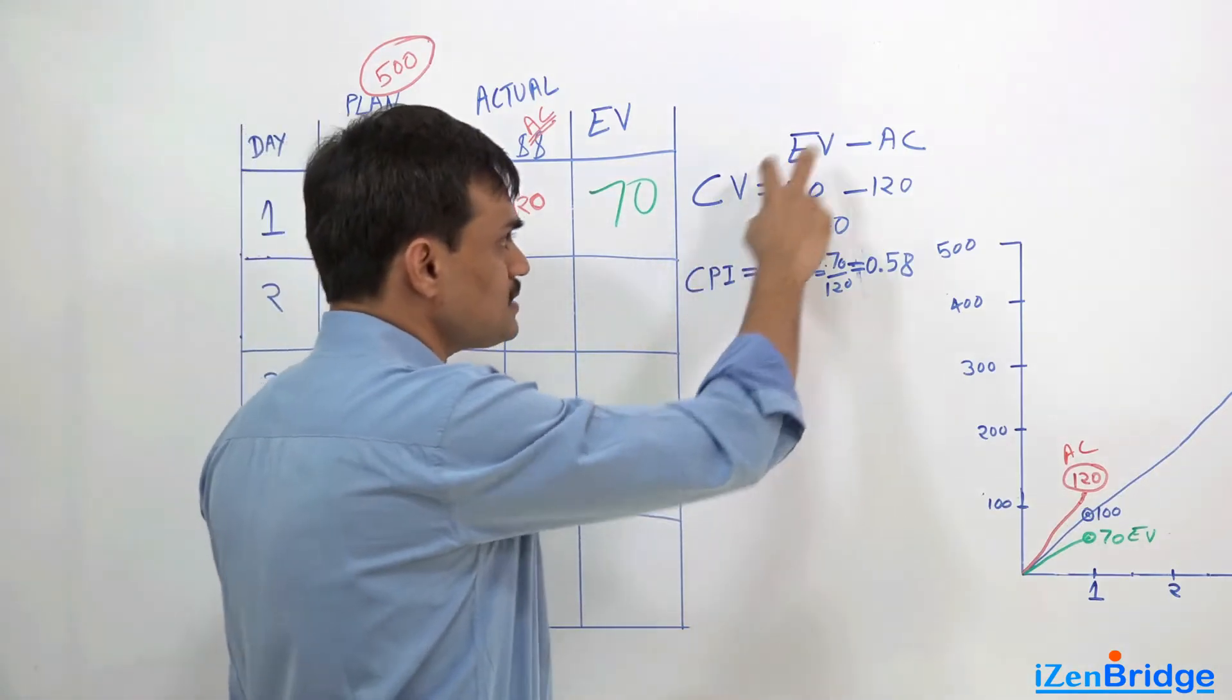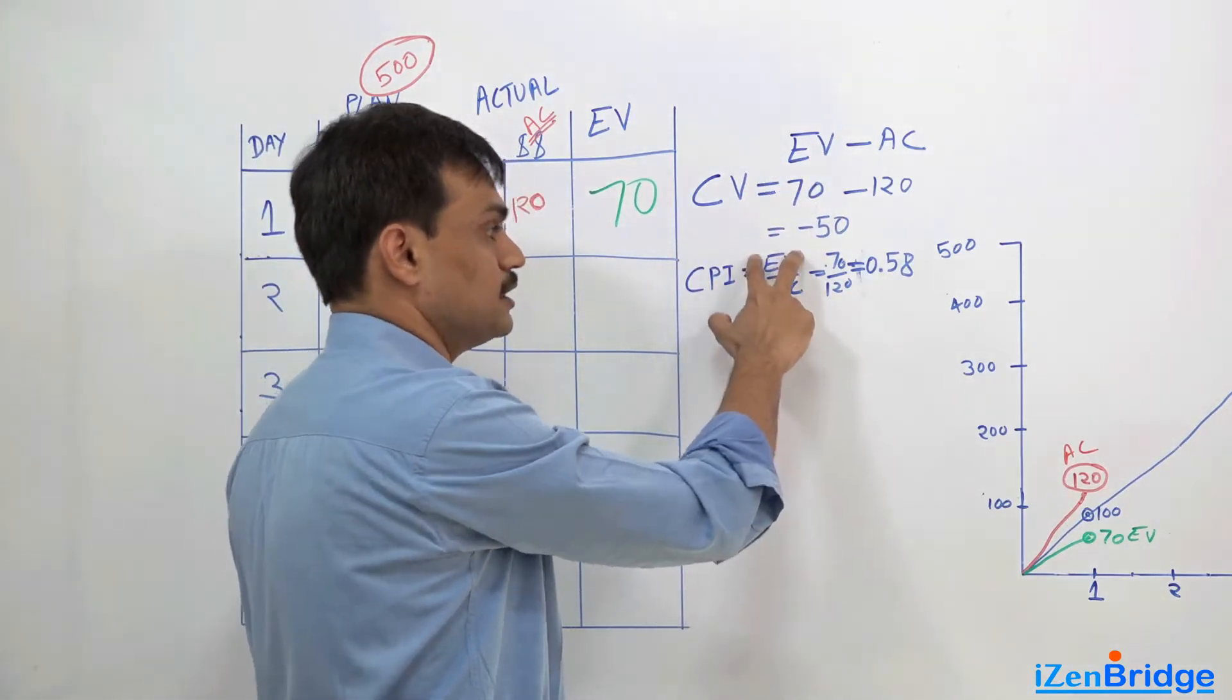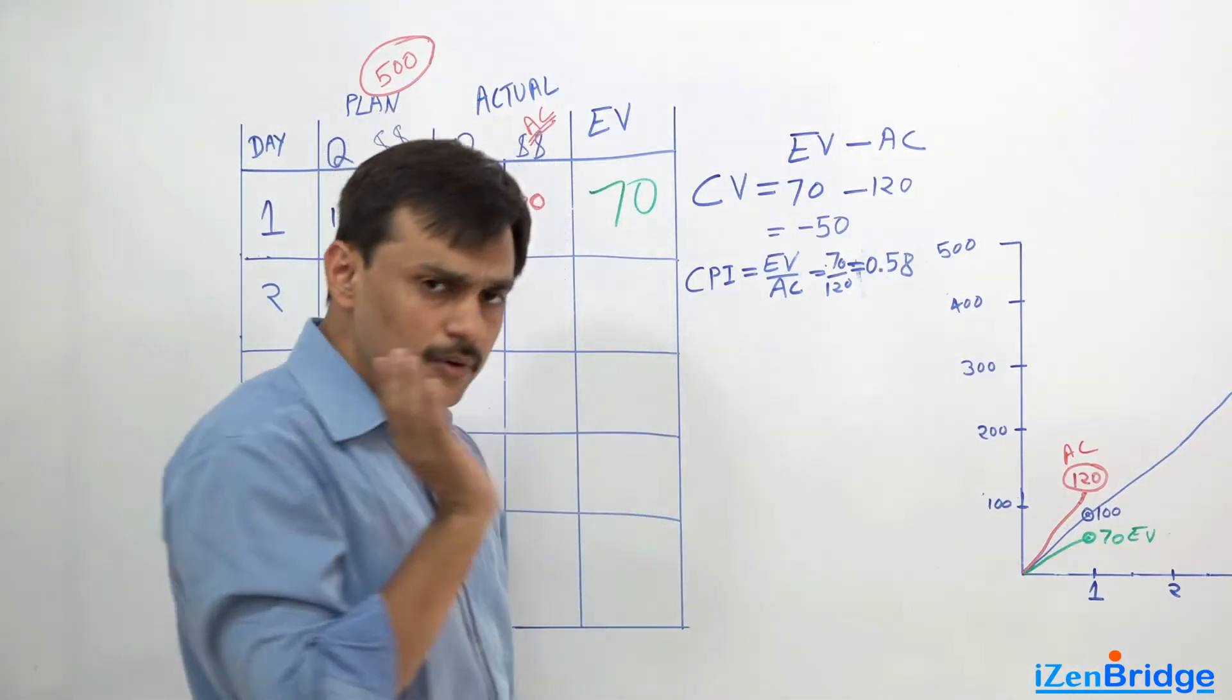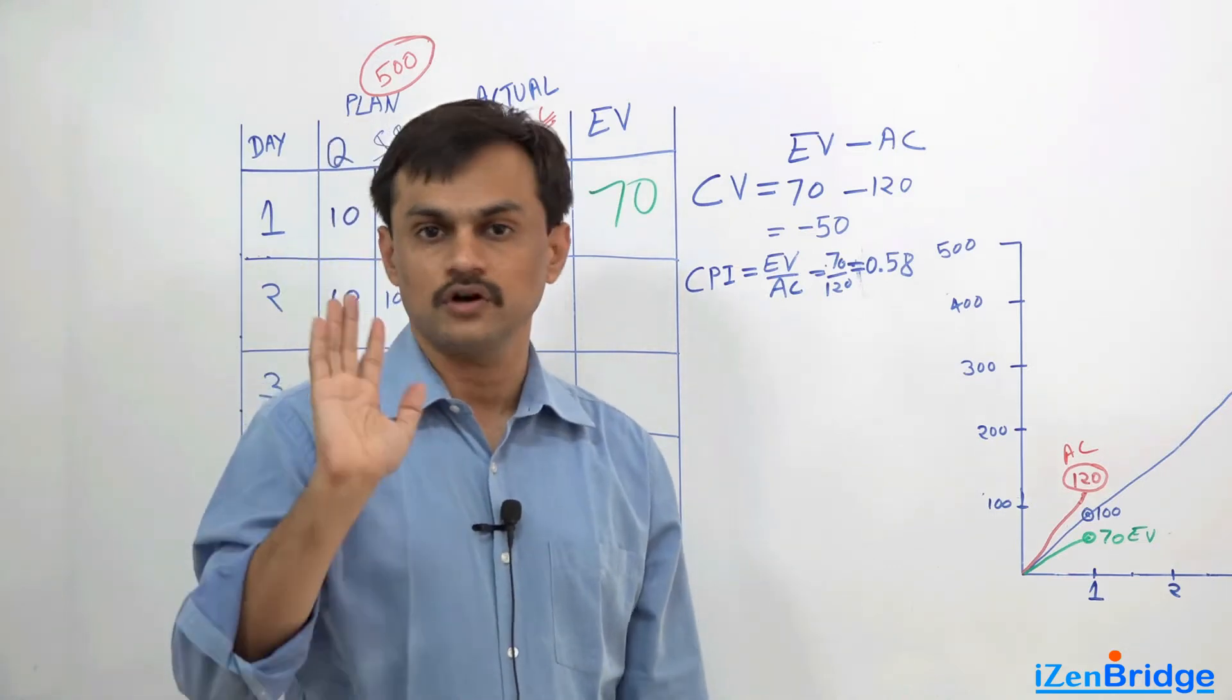So cost variance - earned value. Cost performance index - earned value. Earned value is the source of all the information. Now, if it is about cost, the second figure is actual cost.